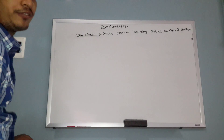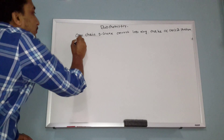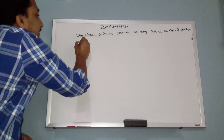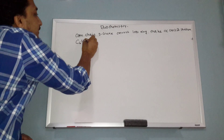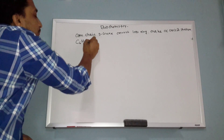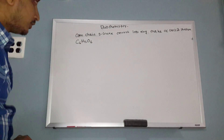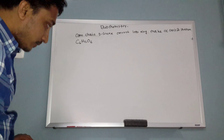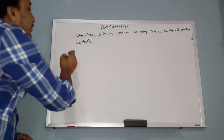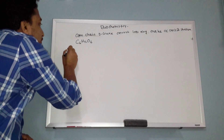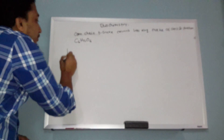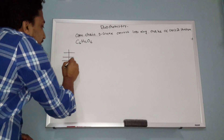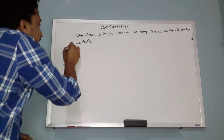Right now, you should know the molecular formula for D-glucose: it is C6H12O6. And you should also know the Fisher projection of D-glucose, because I showed you in my earlier videos.